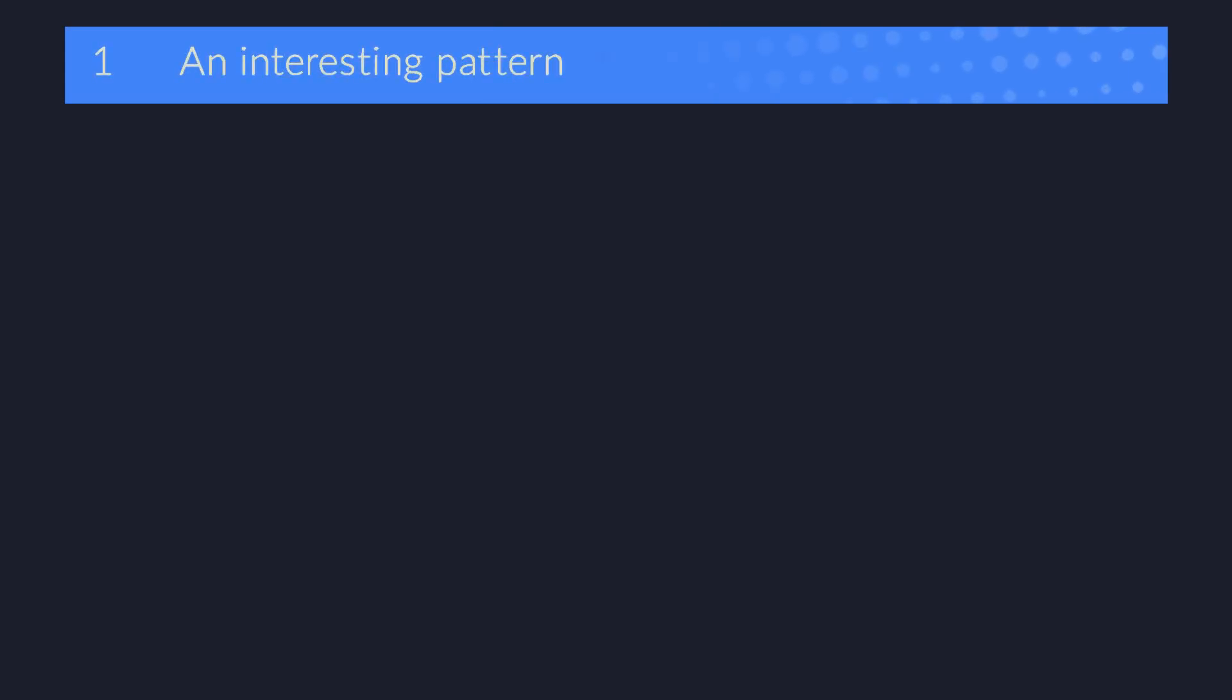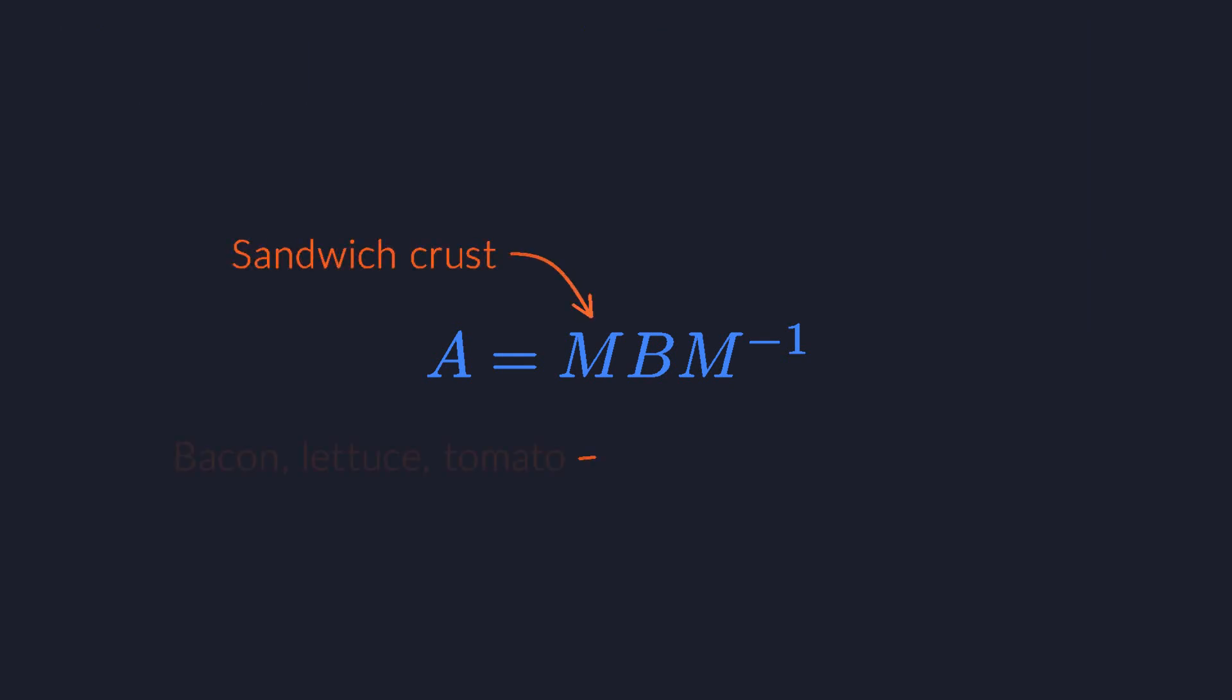There's a very common pattern in mathematics that keeps popping up in many different domains. It often takes the form of a sandwich formula like this one, where you sandwich one thing in between two other things that are each other's inverses. We already encountered this pattern in the context of groups and conjugacy, but it occurs in a diversity of other contexts as well.